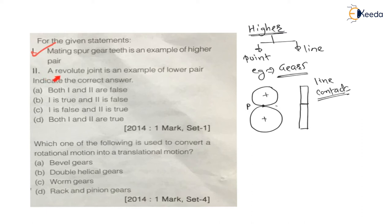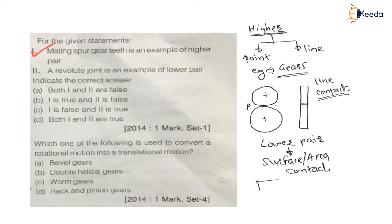Now the second statement: a revolute joint is an example of lower pair. Lower pair means there is surface contact or area contact. For example, an object kept on the ground has area contact with the ground — that is a lower pair. A revolute joint is a pin joint, and in a pin joint there is always surface contact. Therefore it is an example of lower pair only, and the second statement is also true. Therefore both statements 1 and 2 are true.